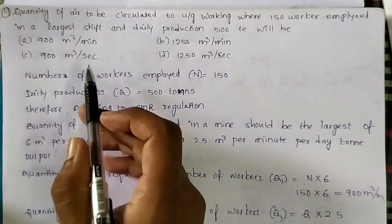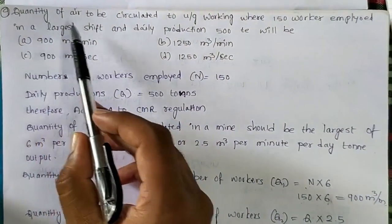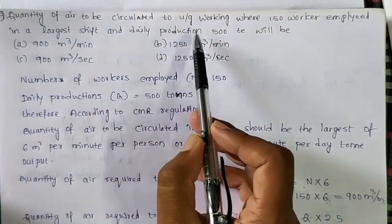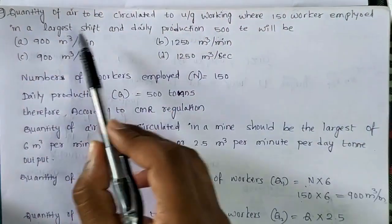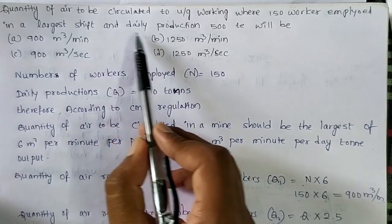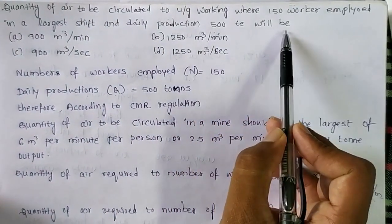Here we will see the next problem. The quantity of air to be circulated to underground working where 150 workers employed in a large shift and daily production 500 tons will be.